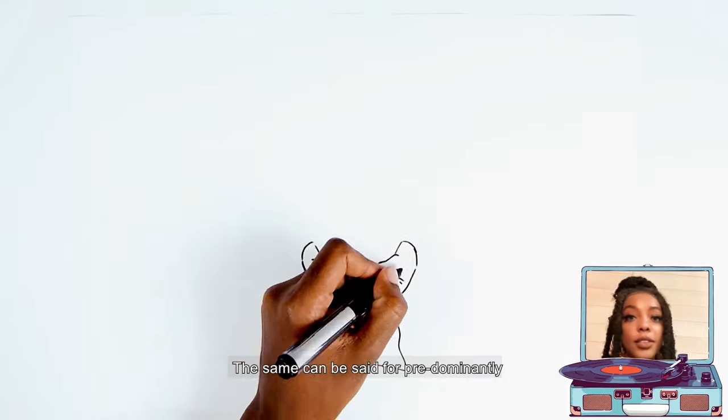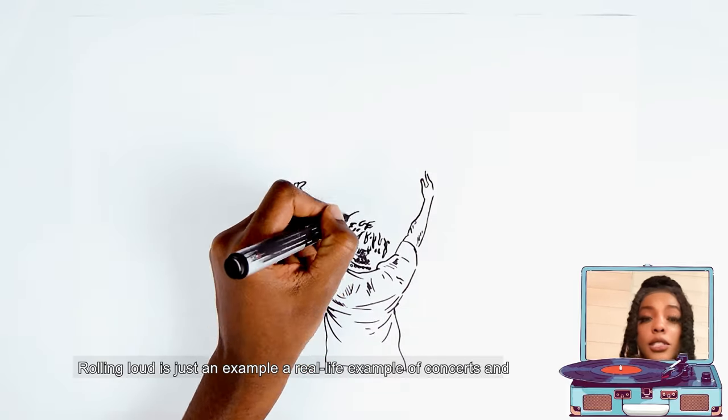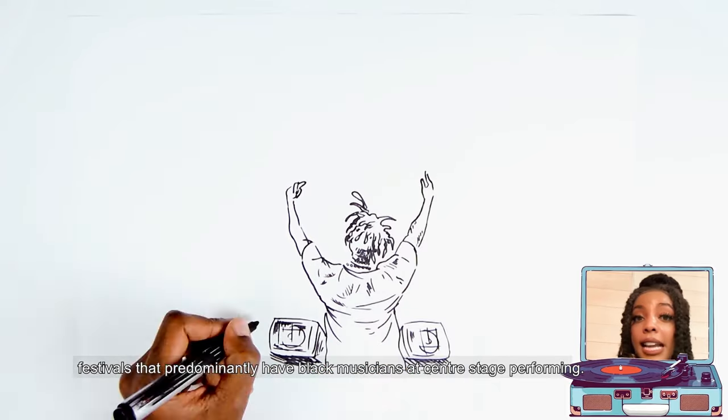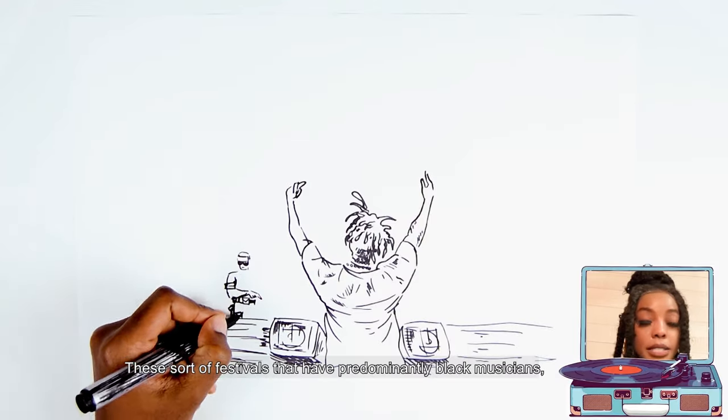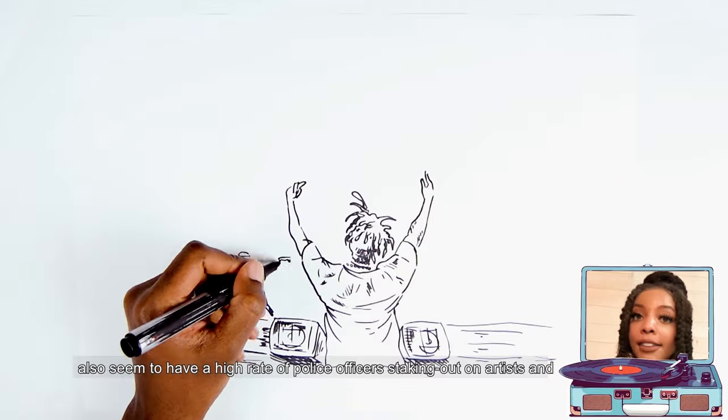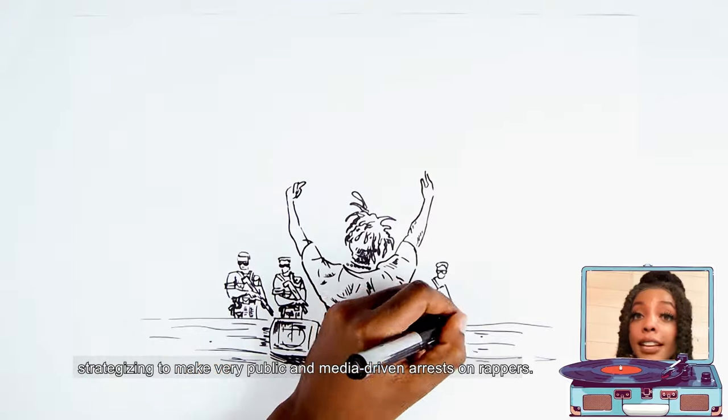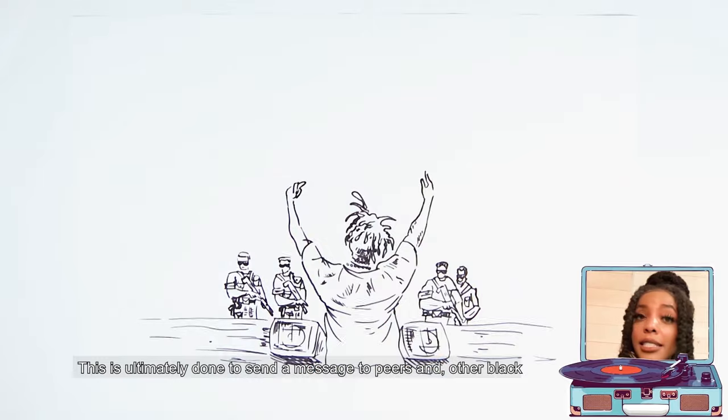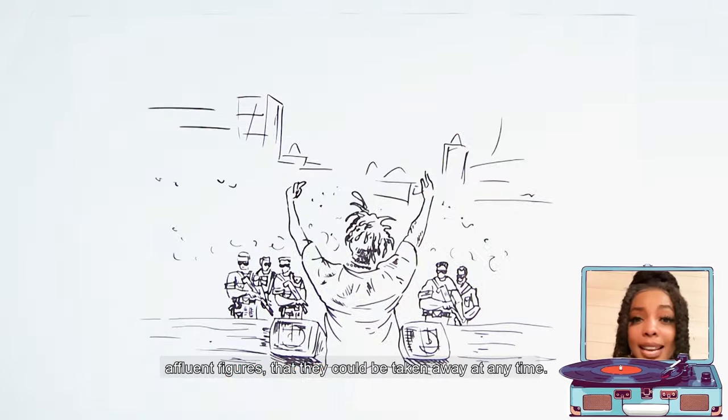The same can also be said for predominantly hip-hop festivals where police are overly present. Rolling Loud is just a real-life example of concerts and festivals that predominantly have Black musicians at center stage performing. These sort of festivals that have predominantly Black musicians also seem to have a high rate of police officers staking out on artists and strategizing to make very public and media-driven arrests on rappers. This is ultimately done to send a message to peers and other Black affluent figures that they can be taken away at any time.